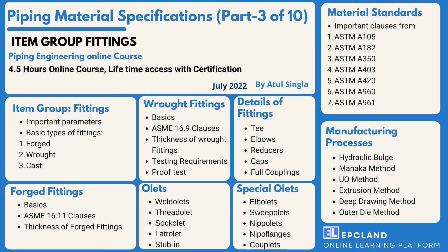We'll also quickly look at various manufacturing processes for these fittings to understand how they are manufactured. Then we'll look into many material standards — all the forged, wrought, and casting materials we use. We'll cover each ASTM standard in detail, and after going through all seven ASTM standards, we'll understand how they need to be referred to in live projects.